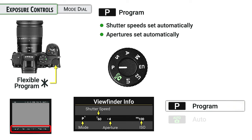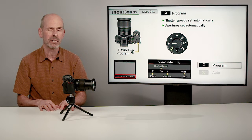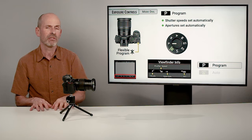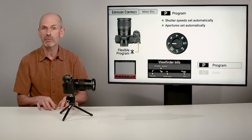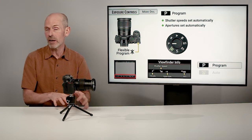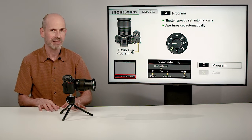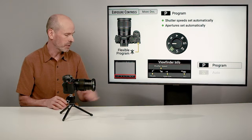One of the nice things about program is something called flexible program. By turning the main control dial on the camera, you can adjust the shutter speeds and apertures into a different combination. No matter what you do, it's always going to be letting in the correct amount of light — it's just changing the different values so you can have different options depending on whether you want faster shutter speeds, more depth of field, or whatever aspect you're trying to get set for a particular photograph.